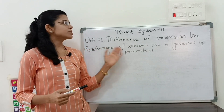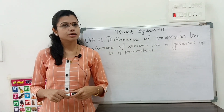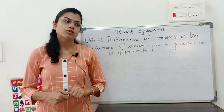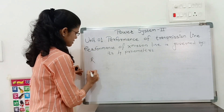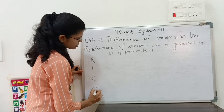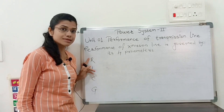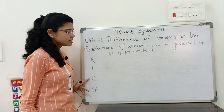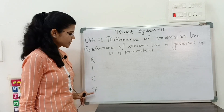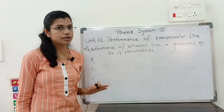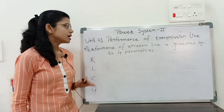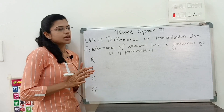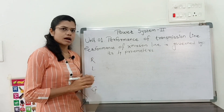The performance of a transmission line is governed by its four parameters. Basically there are four parameters: R means series resistance, L means inductance, C means shunt capacitance, and G means shunt conductance.